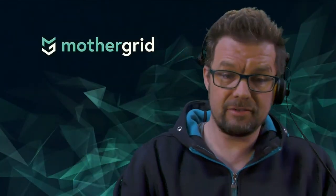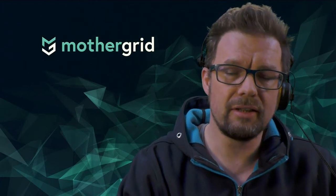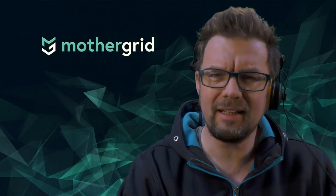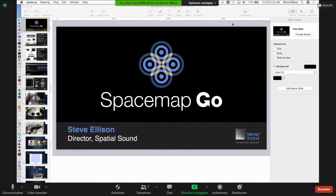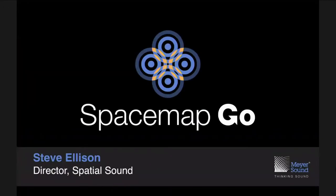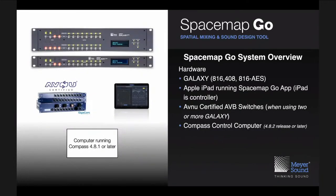SpaceMap Go was introduced and has gone through the press some days ago. What exactly do we have to imagine under SpaceMap Go? Well, I'm going to share my screen and have some graphics here. SpaceMap Go is a spatial audio mixing tool that is built around the Meyer Sound Galaxy audio processor product. The Galaxy is a scalable signal processor.